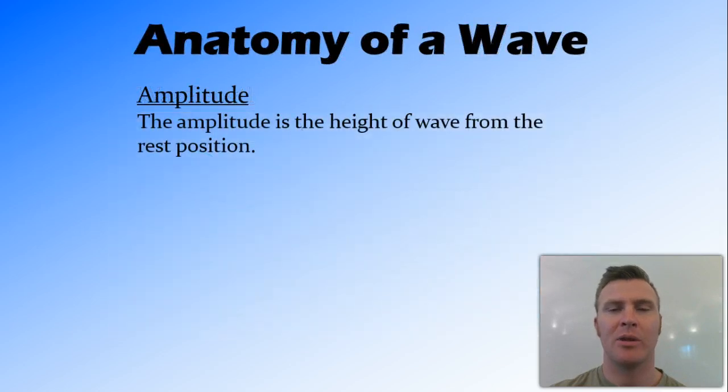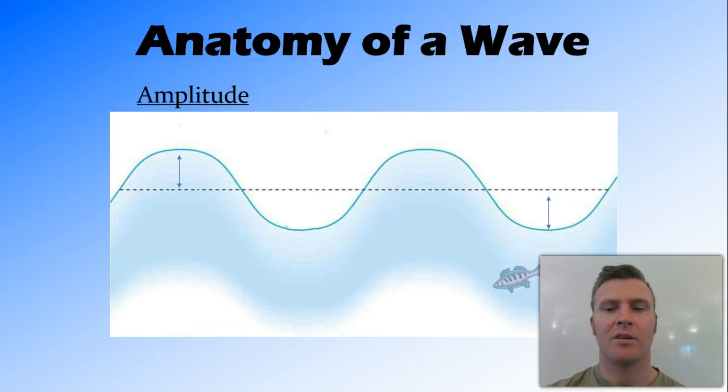Next we'll look at the amplitude. The amplitude is the height of the wave from the rest position. So to look at this, we can either measure it from the rest position to the crest, or from the rest position to the trough. The temptation here is to measure the height from crest to trough. Don't do that. That actually gives you twice the amplitude. It's just one or the other.